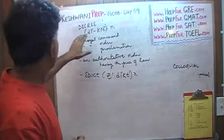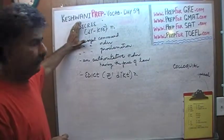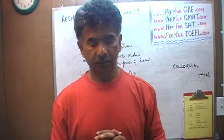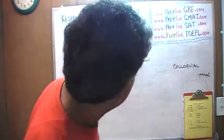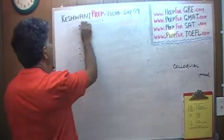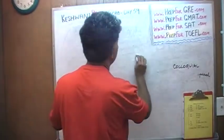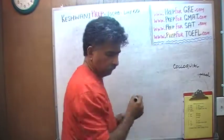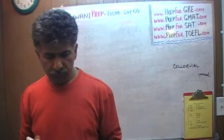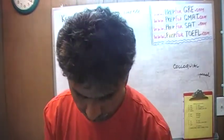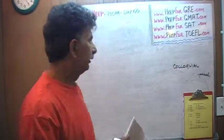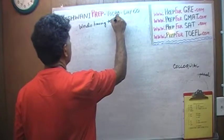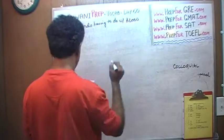Hello, my name is Keshwani — that's K-E-S-H-W-A-N-I — Keshwani. We are here because we want to improve our English, we want to improve our vocabulary. Today is our lesson number sixty. We're going to talk about a few words today — three or four words — and all of today's words have to do with blood.